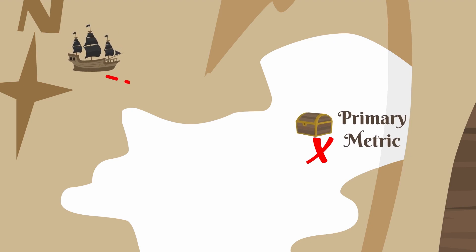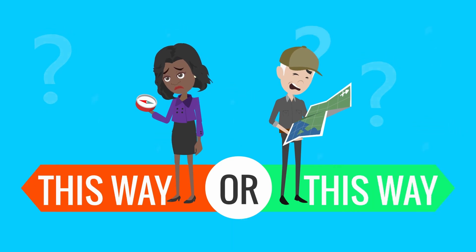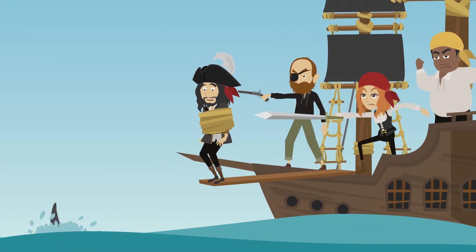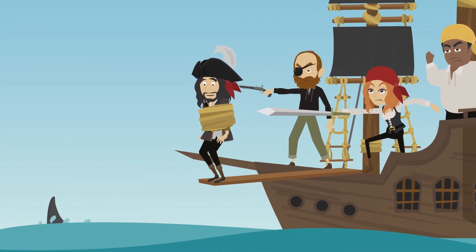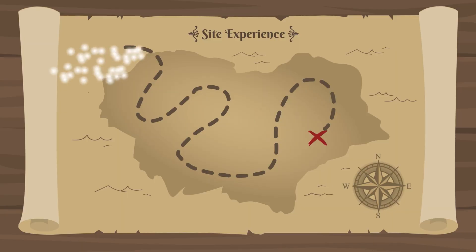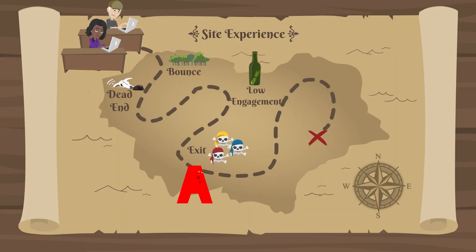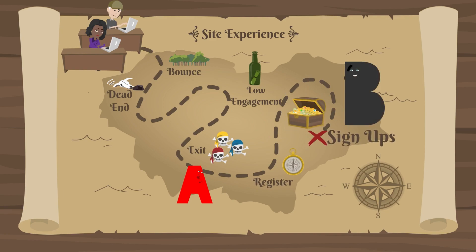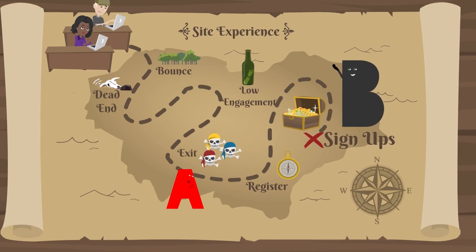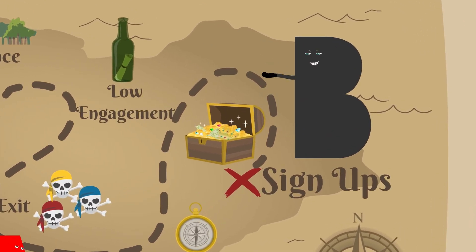So why don't businesses just help their visitors get to the treasure? Of course they want to, but they don't always know what their visitors want. In fact, the visitors don't know what they want either most of the time. The problem is not A/B testing to solve the problem — A/B testing gives the business insight into what leads the visitors down the perfect path to get to the treasure.